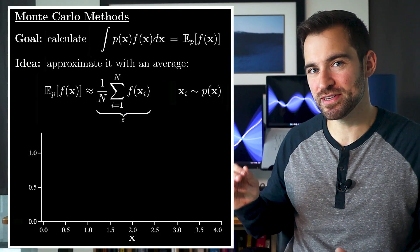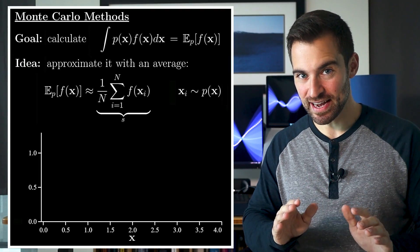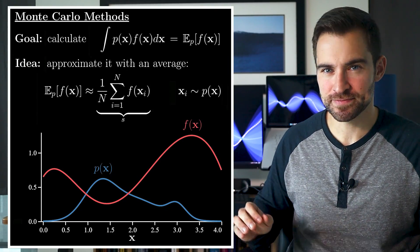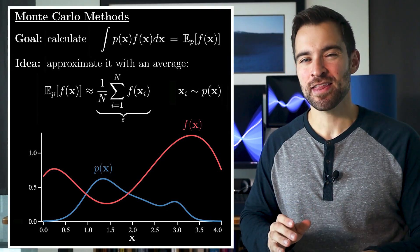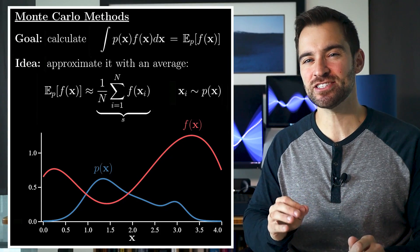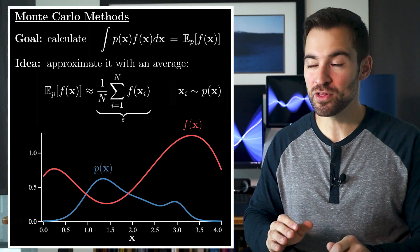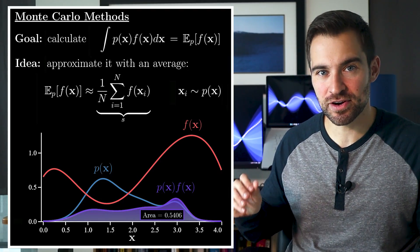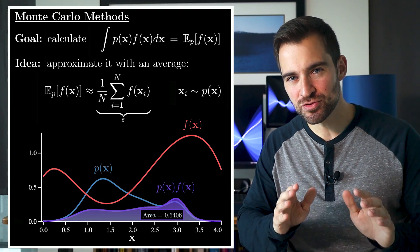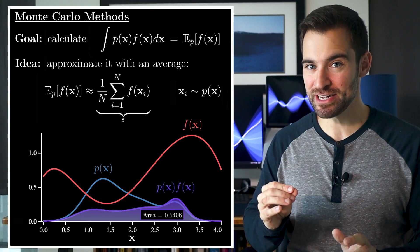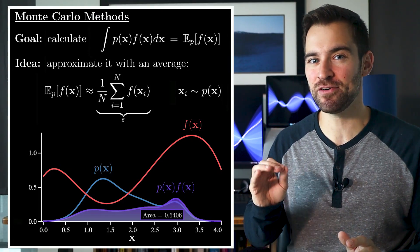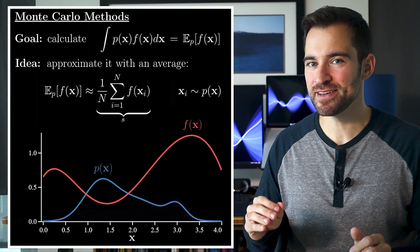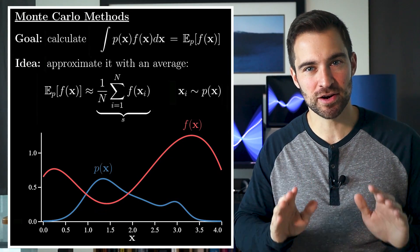To get a feel for this, let's play with a one-dimensional example. Let's say, p(x) is this, and f(x) is this. In this case, things are simple enough such that we can calculate the answer exactly. To do that, we look at the product function and calculate the area under the curve. This is the truth we're after. But please, use your imagination and pretend we can't actually calculate the area this way.